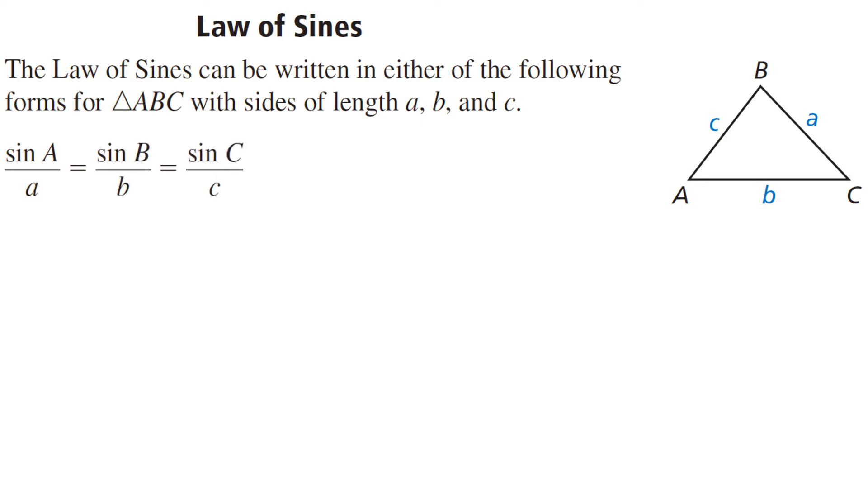And I can either set up the proportion where the sign of the angle is in the numerator and the length of the side is in the denominator. Or I can set up the proportion so that the length of the side is in the numerator and the sign of the angle is in the denominator. Right, it's just sides now. There's no legs and hypotenuse because we don't have a right angle.